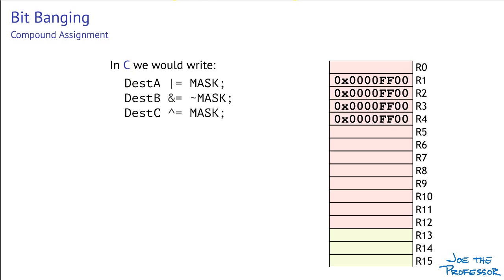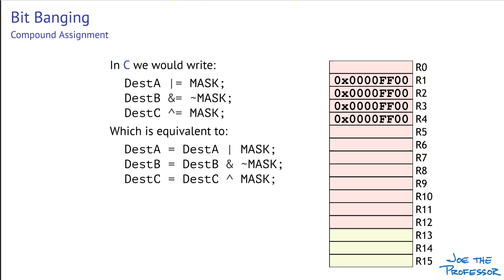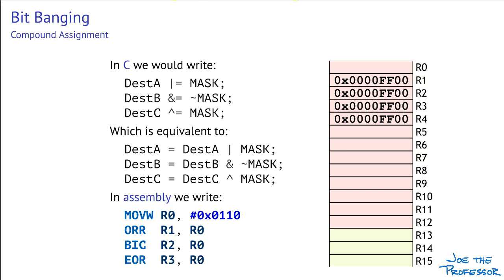In C, we have a shorthand way of doing bit banging called a compound assignment. Basically, we combine a bitwise logical operator with the assignment, and the variable on the left-hand side of the assignment is also used as the first operand on the right-hand side. The compound assignments are exactly equivalent to the full statement, and are just a shorthand method we can use when we want to overwrite the original value of the variable. The two-operand form of the assembly language instructions is similar to the compound assignment in C: the first operand — the destination register — is also used as one of the source operands, and the result replaces the original value in the destination register. Each instruction modifies the destination register bits that correspond to 1 bits in the mask.